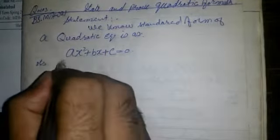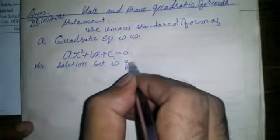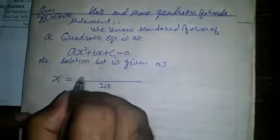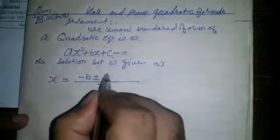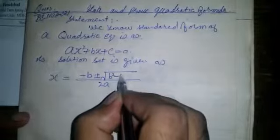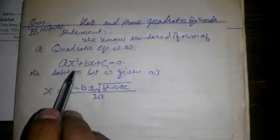So its solution set is given as x = (-b ± √(b² - 4ac)) / 2a. This is the statement of the quadratic formula.